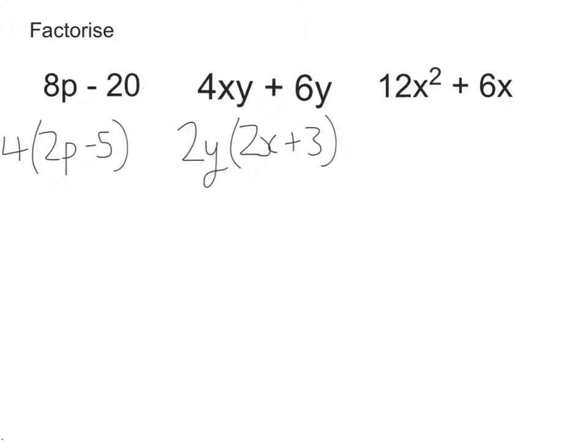And now let's look at the last one. 12x squared plus 6x. So the largest number that comes out of both of them is 6. So you could have chosen 3 or 2. But we're always looking for the largest number. And the largest letter that comes out of x squared and x is x. So now let's divide both sides by 6x. Well, 12x squared divided by 6x. 12 divided by 6 is 2. x squared divided by x is x.